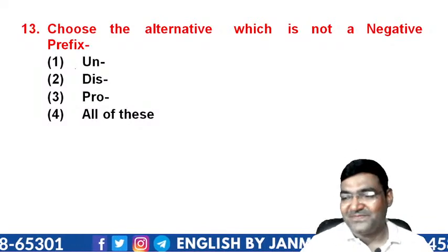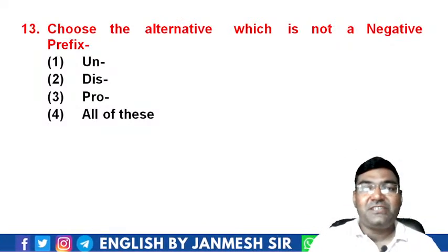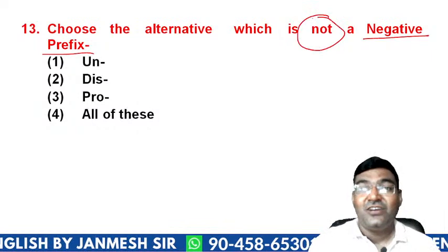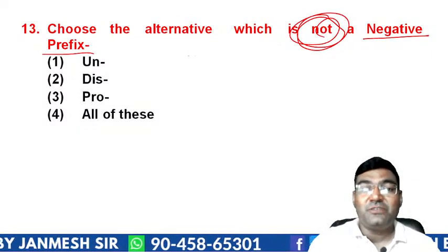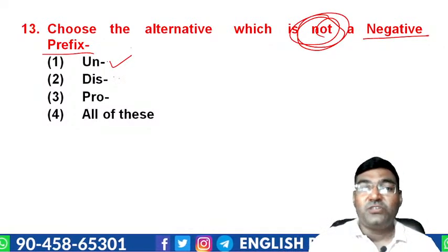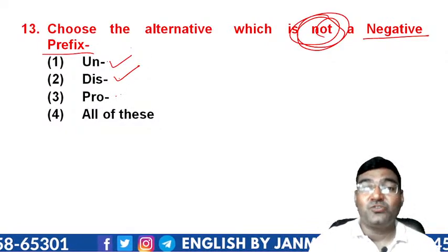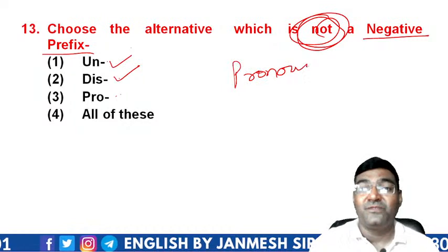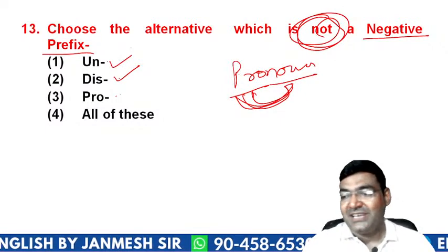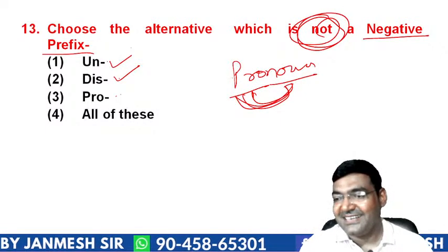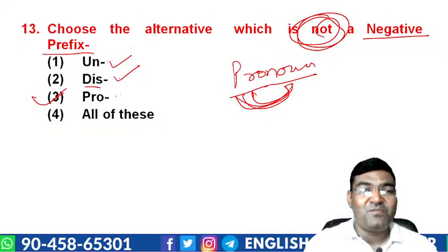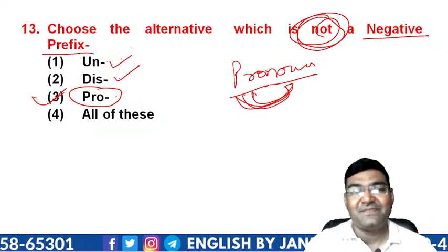Question 13: choose the alternative which is NOT a negative prefix. Options are 'un-', 'dis-', 'pro-', and another negative prefix. 'Un-' is negative — for example, 'unsubscribe'. 'Dis-' is negative — for example, 'dispose'. But 'pro-' means in favor of something — as in 'pronoun', where 'pro' means working in favor of a noun. So 'pro-' is NOT a negative prefix. The answer is option 3 — 'pro'.